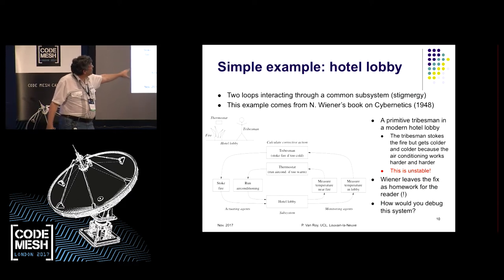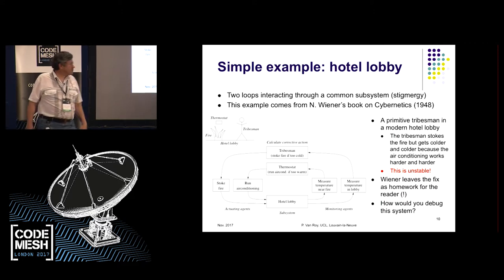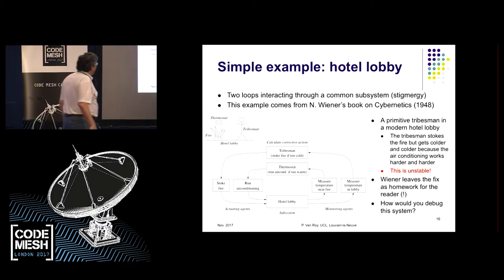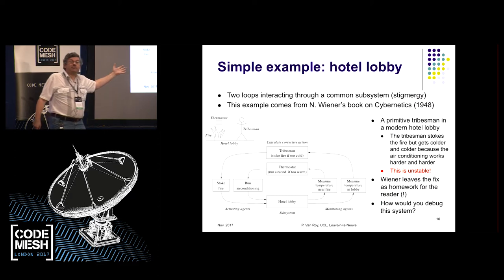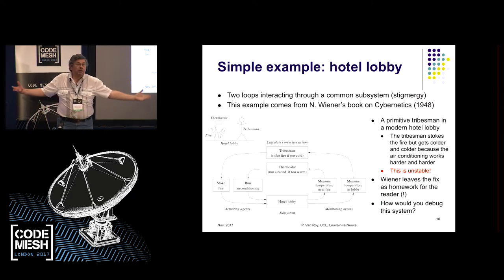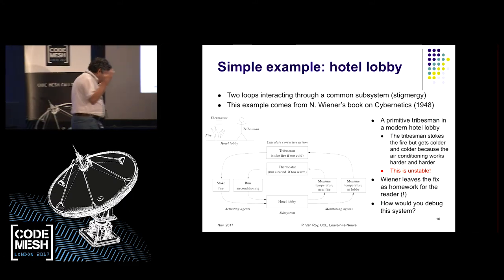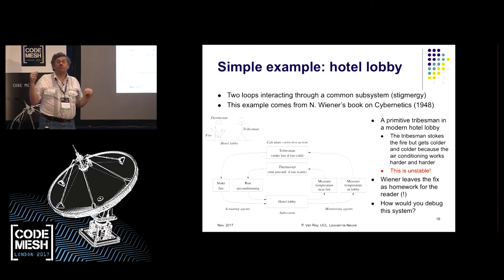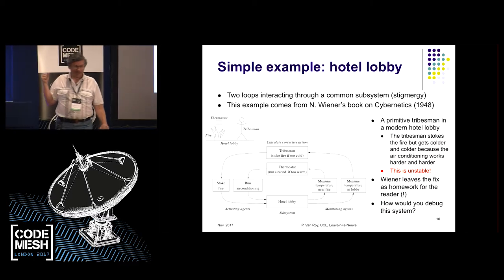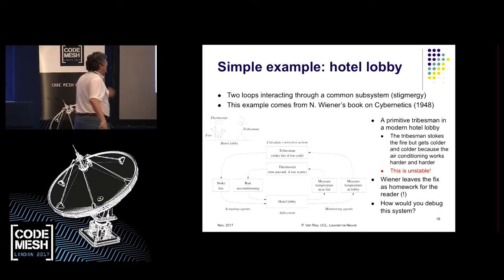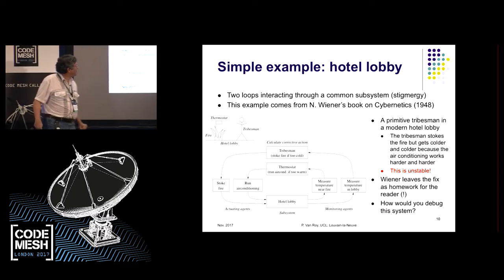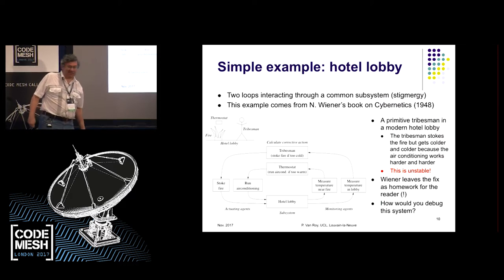This example comes directly from Norbert Wiener's book on cybernetics. There's a problem with this system: it's unstable. How would you debug such a system with two interacting feedback loops? How would you redesign it to remove the instability? Wiener asks this in his book and leaves the fix as homework for the reader — he doesn't actually give the solution.